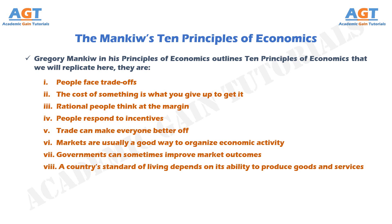Principle No. 9: Prices rise when the government prints too much money. In Germany in January 1921, a daily newspaper cost 0.30 marks. Less than two years later, in November 1922, the same newspaper cost 70 million marks. All other prices in the economy rose by similar amounts. This episode is one of history's most spectacular examples of inflation — an increase in the overall level of prices in the economy. In almost all cases of large or persistent inflation, the culprit turns out to be the same: growth in the quantity of money. When a government creates large quantities of the nation's money, the value of the money falls.